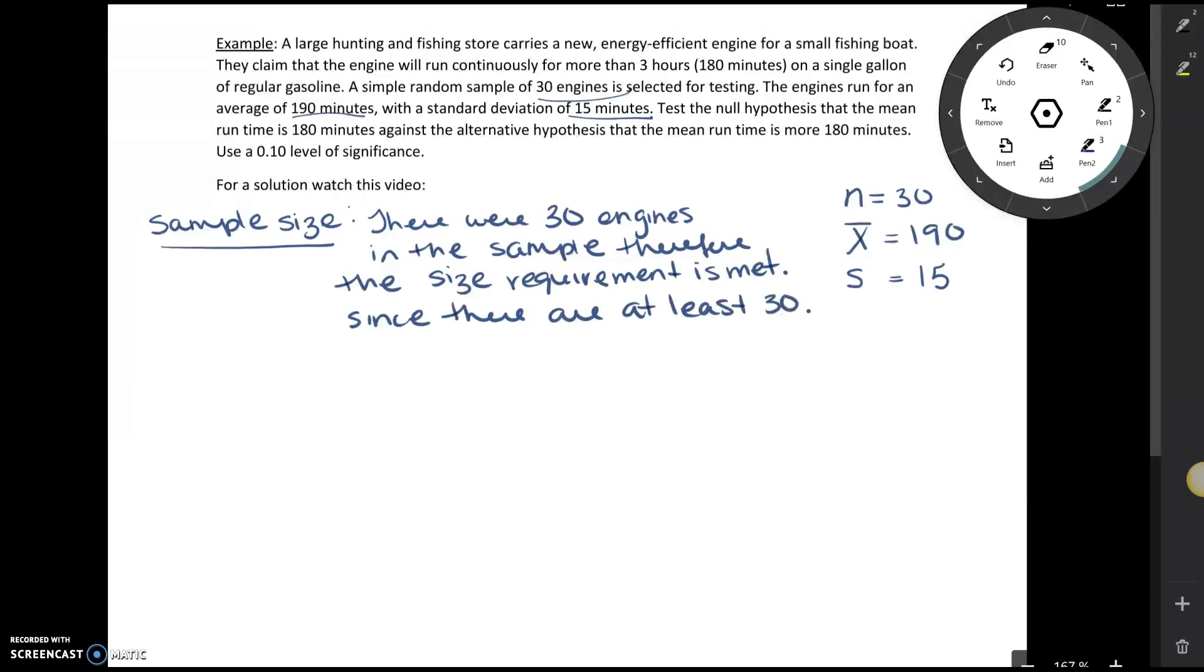Once we've checked our sample size requirement, we're going to set up our hypotheses. This question pretty much tells us what they are. We're going to test the null hypothesis that the mean runtime is 180 minutes. When setting up our hypotheses, we always want the null and the alternative. So in this case, the population mean is equal to 180 under the null against the alternative that the mean runtime is more than 180 minutes. So we've got mu greater than 180.